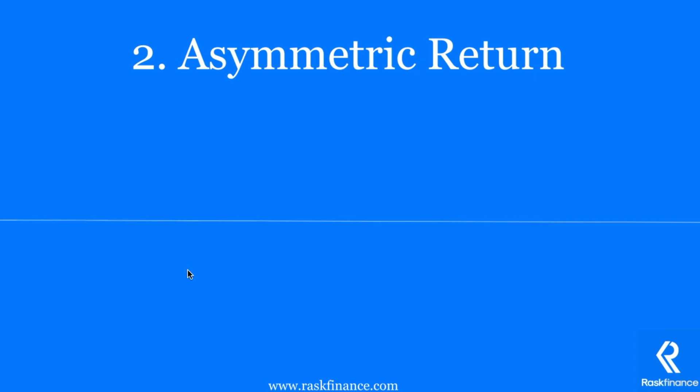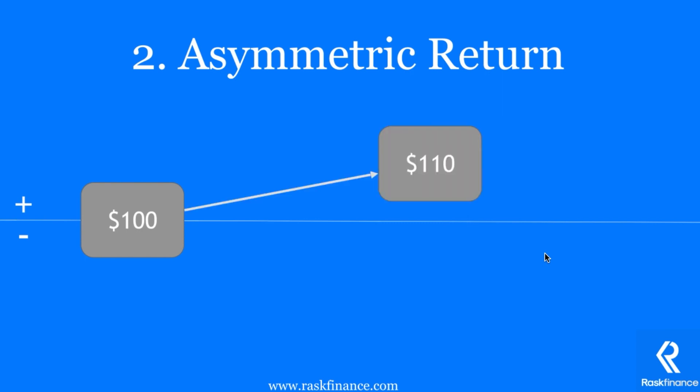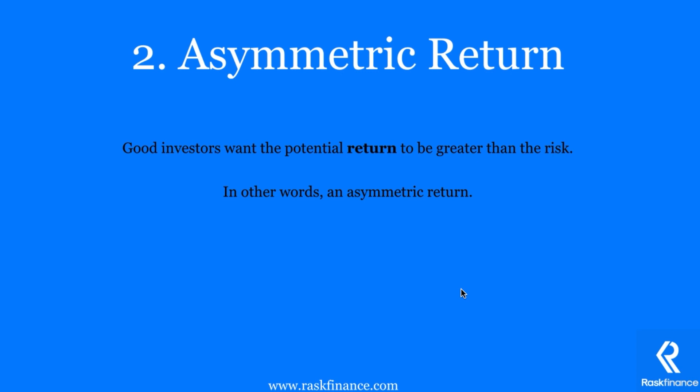The second concept is asymmetric return. Let's say you are valuing Apple shares today and it's priced at $100. Anything above this white line is profit and anything below it is a loss. You conduct a valuation and find that Apple is worth either $110 or $90 per share, depending on whether its latest device is a success — and both outcomes are equally likely. If you bought Apple shares today you would either lose $10 or make $10 in profit. You wouldn't make this investment, because the risk is the same as the reward. Good investors want the potential return to be greater than the risk — an asymmetric return profile.